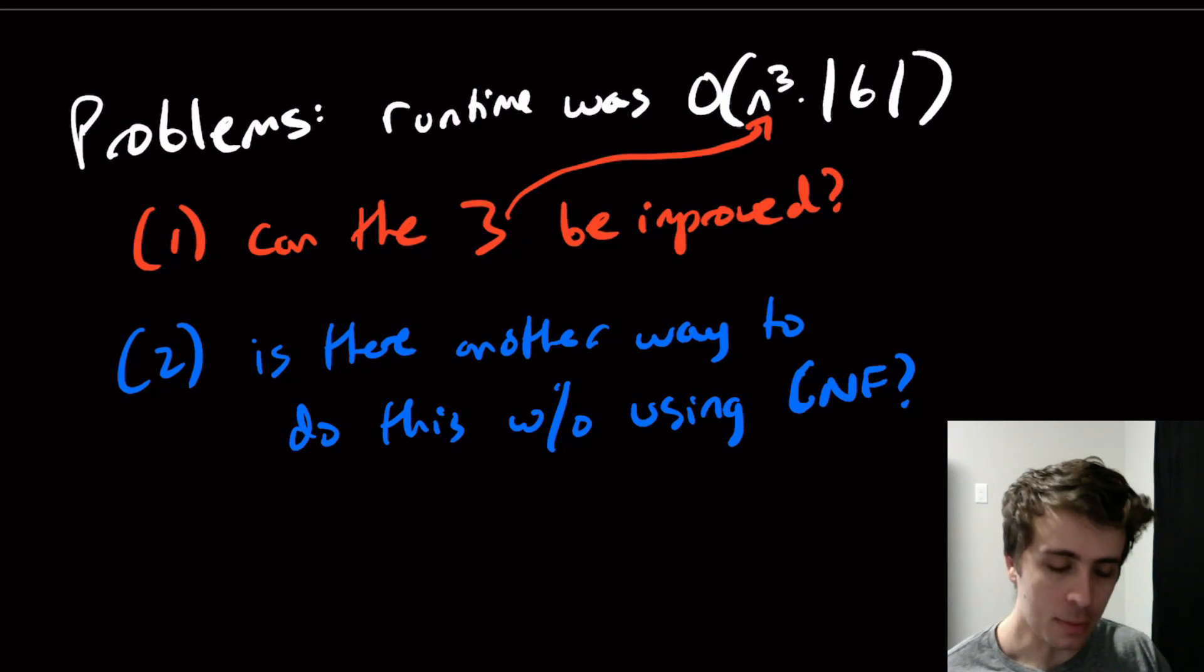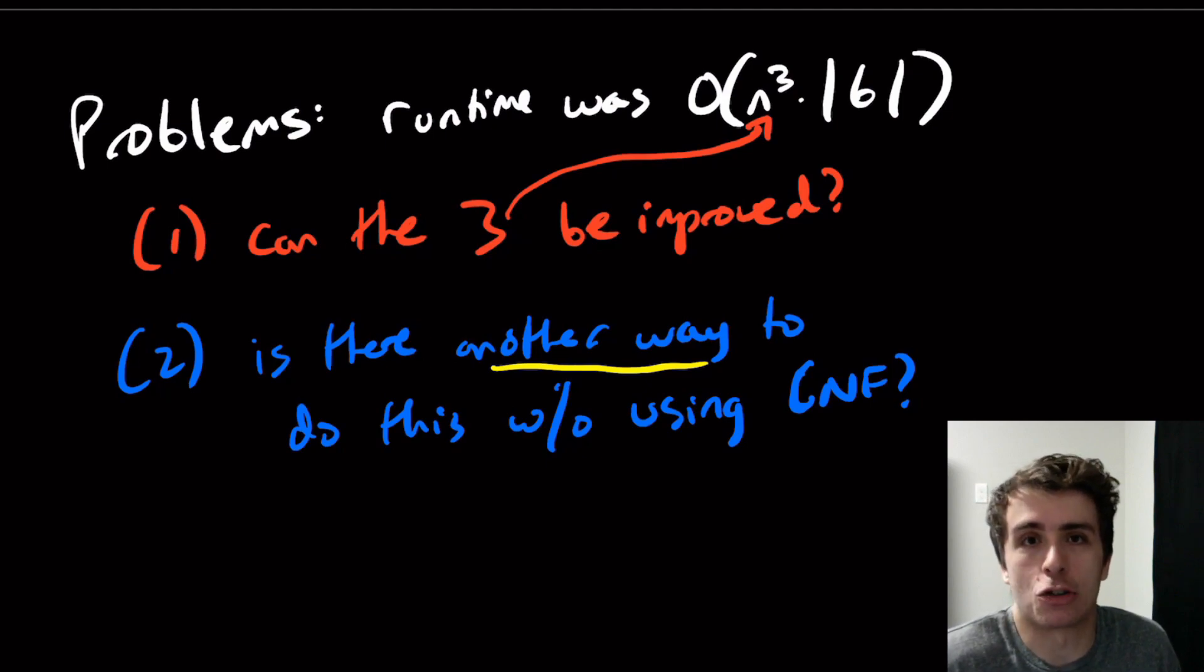So it may not be possible in general without Chomsky Normal Form. Or another way might be, could there be a different form? There are many different forms that you can put context-free grammars into. So is there another way that we can actually do this?